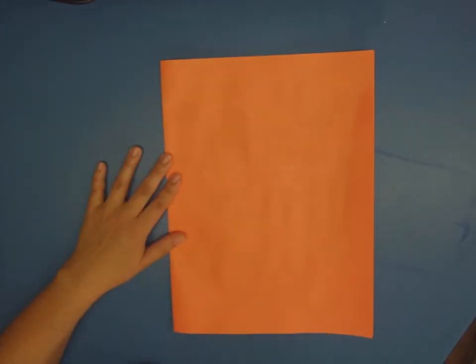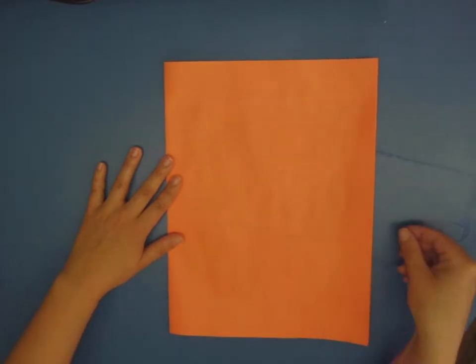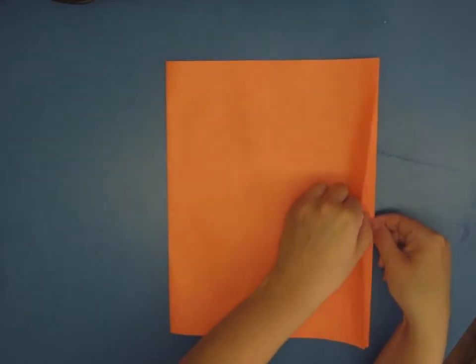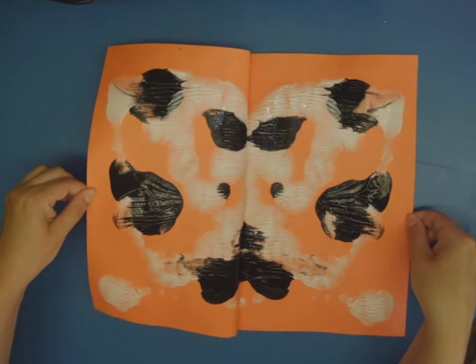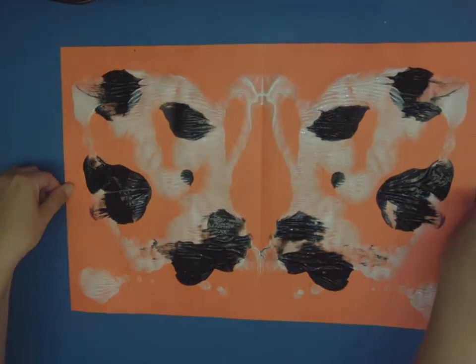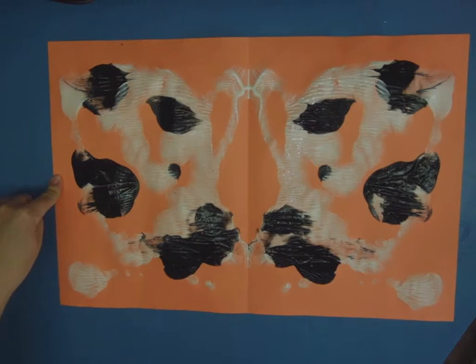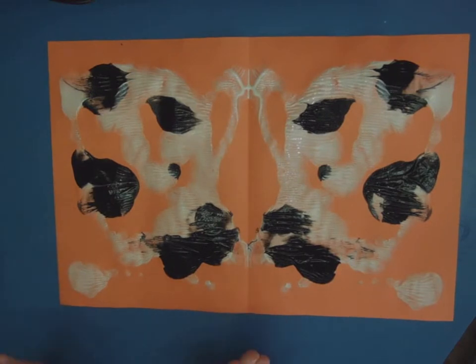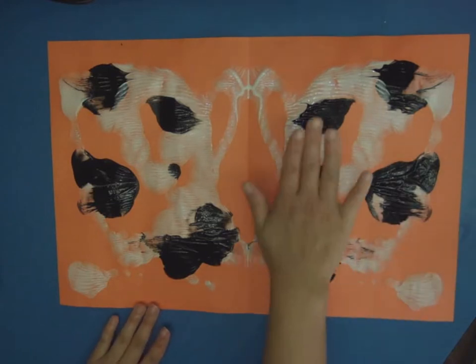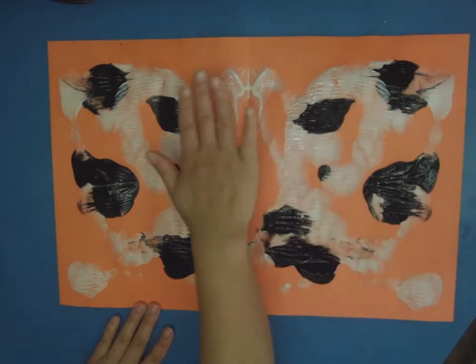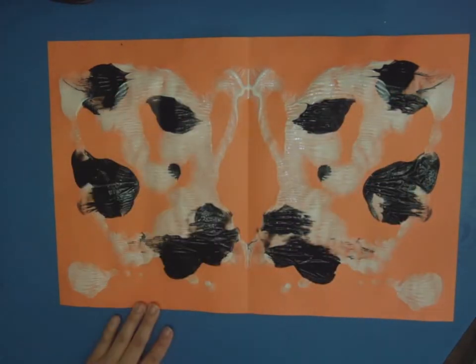Okay are you guys ready for the grand reveal? I'm going to open up my book. So you can see that I have the most beautiful symmetrical, which means what happens on one side happens on the other, butterfly here.